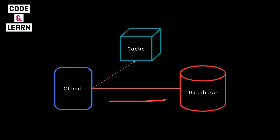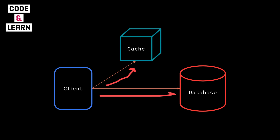Instead of constantly hitting the database or your primary data store for frequently accessed information, you store a copy of this information into a cache — a cache like Redis. Caches are much faster temporary locations that enable you to retrieve data instantly whenever your application needs it. This trip to the cache is much less expensive than the trip to the database because caches are in-memory. They temporarily store data in RAM, while databases store data in the file system, which involves IO and is thus expensive.